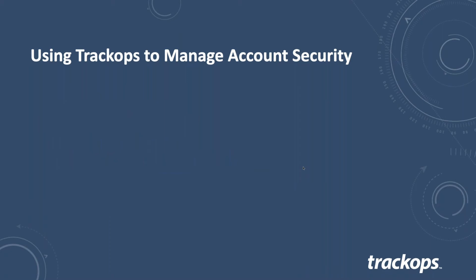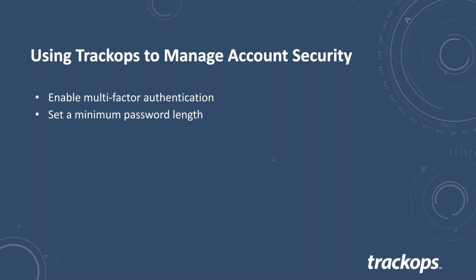In TrackOps, through your User Security Settings, you can manage several account security items. You can enable multi-factor authentication as a global setting, allowing all staff to then enable it on their own accounts — note that staff will need to connect their own phone to their account. You can also set a minimum password length. Since password strength is almost entirely determined by length, setting a minimum of 12 characters — as opposed to the default eight — is a significant improvement. Once you set that minimum, it won't require everyone to change their password immediately if they're below 12; it'll apply on the next password change.